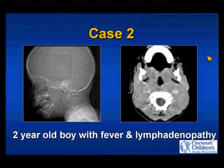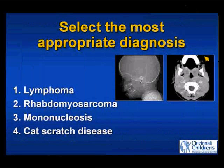Case number two: a two-year-old boy with fever and lymphadenopathy. Lateral scout radiograph and an axial image of the neck — indication: rule out abscess. Select the most appropriate diagnosis: lymphoma, rhabdomyosarcoma, mononucleosis, or cat scratch disease.